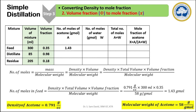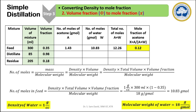Similarly, we find the number of moles of water in the feed mixture. The density of water is 1 g/cc and the molecular weight of water is 18 g/mol. Substituting density, total volume, volume fraction, and molecular weight in the formula, the moles of water in the feed is calculated to be 10.83 gram moles. The total number of moles is the sum of moles of acetone and moles of water, which comes to be 12.26. The mole fraction of acetone is the ratio of moles of acetone to total moles, which comes to be 0.12. Similarly, we calculate the mole fraction of acetone in the distillate and residue.